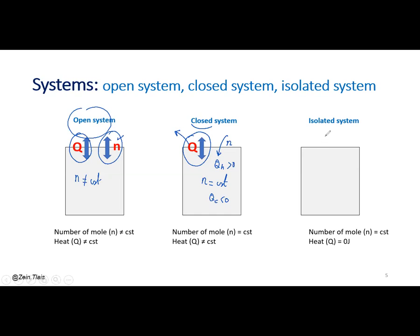In the case of an isolated system, we cannot add N, so N inside must be constant, and we don't have an exchange of energy between the internal and external medium through the wall. But be careful — I can insert a resistance inside the medium, and by using this resistance we can heat the system. We can have an exchange of heat between the resistance and the internal medium, but not through the wall. Here we can get Q-hat, which is gained by the internal medium.